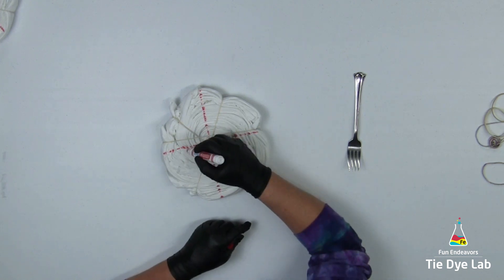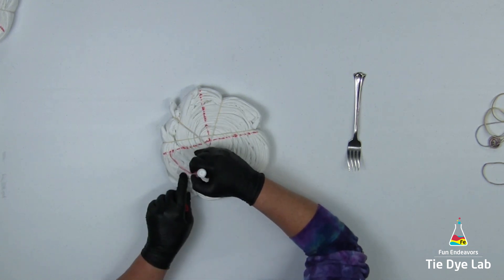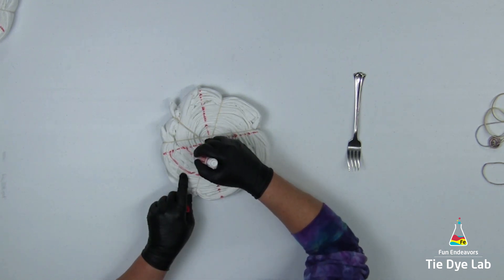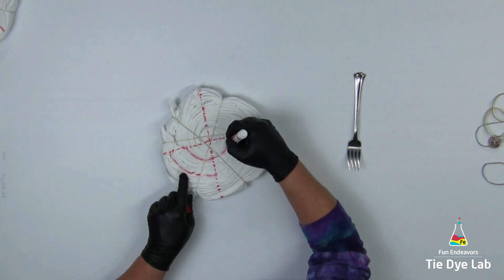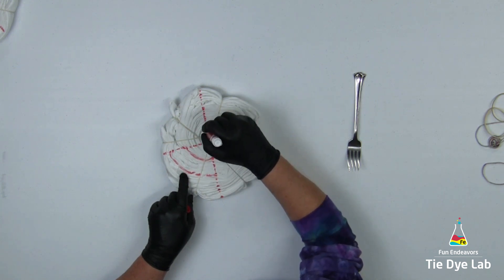Then I want to divide each one of those sections into areas, so I'm going to draw some circles on to divide my shirt. It'll make a little bit more sense when you see me start to apply the dye.